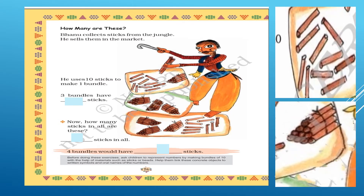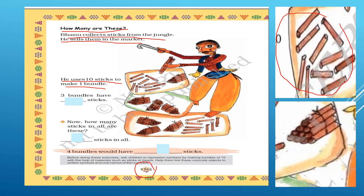Today, we will try to solve page number 26 — How many are these? Bhanu collects sticks from the jungle and sells them in the market. He uses 10 sticks to make one bundle. So, one bundle means 10 sticks.